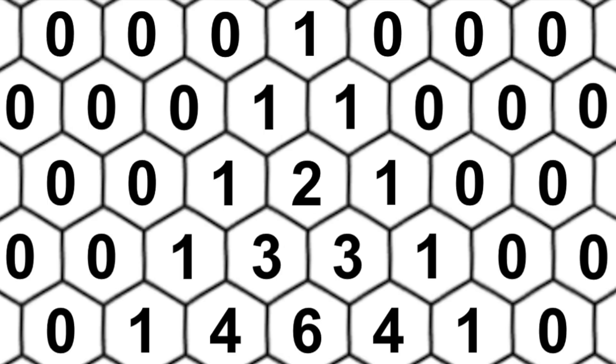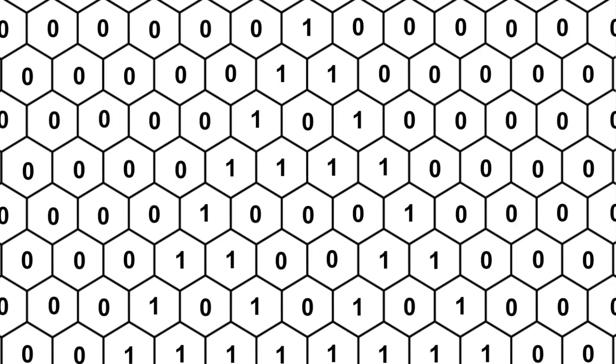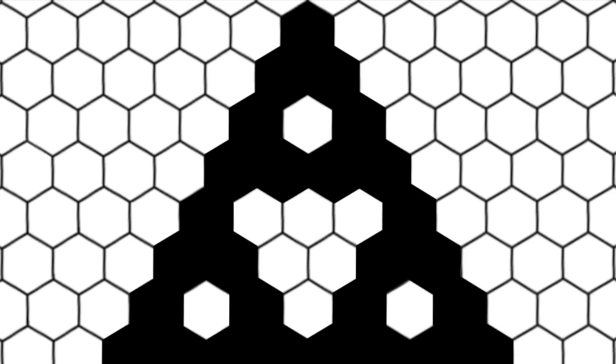So here's the top of the mod two version of Pascal's triangle on a hexagonal grid, and let's color code it, so the ones become black filled in cells, and the zeros become white empty cells.